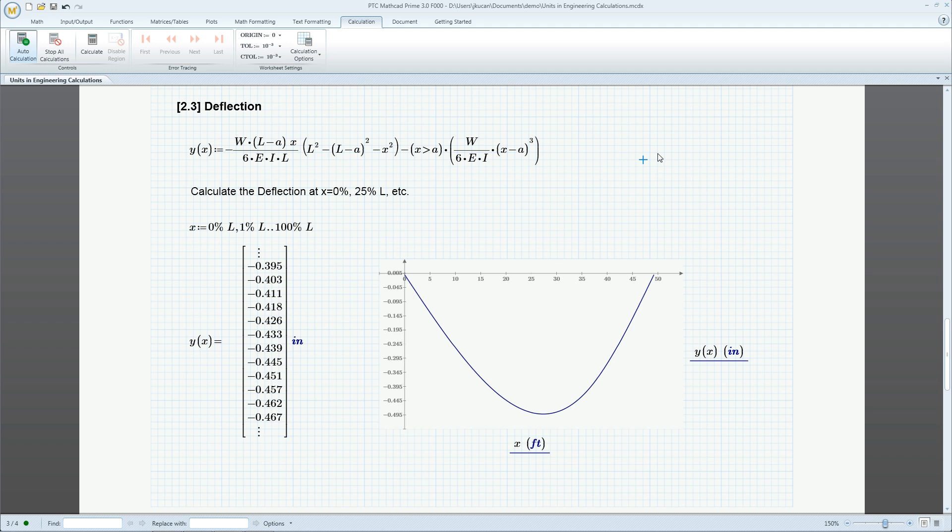Engineers often deal with unit conversion inconsistency. With PTC MathCAD Units Intelligence, we can automatically define and evaluate in units of our choosing. Conversion is done automatically, and consistency is checked to prevent errors.